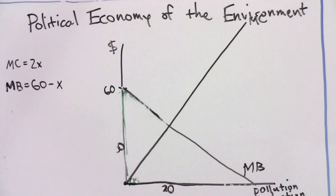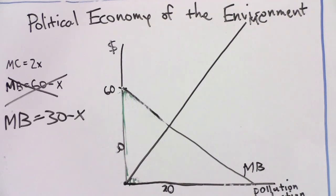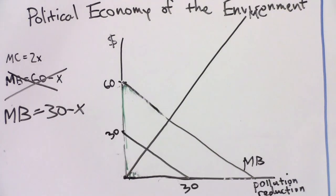To drive this point home, imagine that you lose your job and become poor. Since the benefits of pollution reduction depend on how much you would be willing to pay to reduce your neighbor's pollution, your poverty will almost certainly reduce the marginal benefit of pollution reduction — you are now not willing or able to pay as much in exchange for less pollution. Assume that your marginal benefits of pollution reduction are now given by MB equals 30 minus X. Consider how the impact of your job loss and the associated increase in income inequality affects the efficient level of pollution. What is the efficient level of pollution now, and is that level of pollution fair? Given your answer, where would you expect polluters to site toxic plants? And what would you expect to happen if income inequality increases?